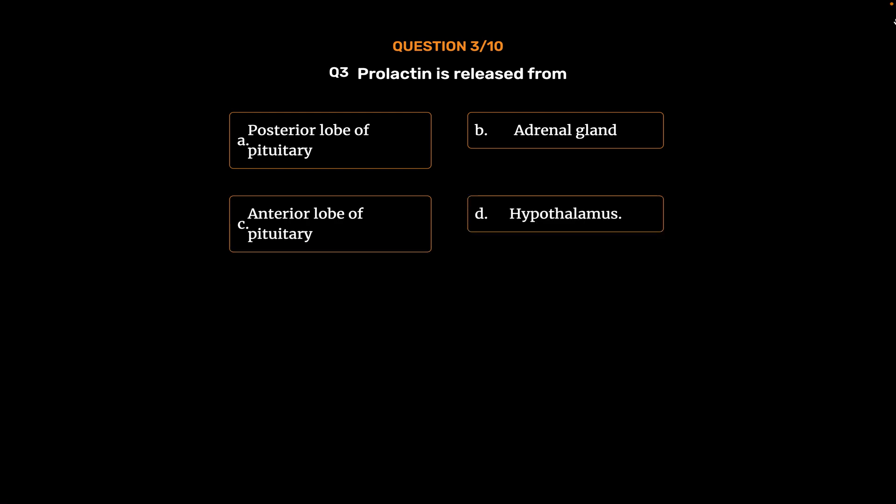Question 3: Prolactin is released from: Option A, Posterior lobe of pituitary; Option B, Adrenal gland; Option C, Anterior lobe of pituitary; Option D, Hypothalamus. The correct answer is Option C, Anterior lobe of pituitary.